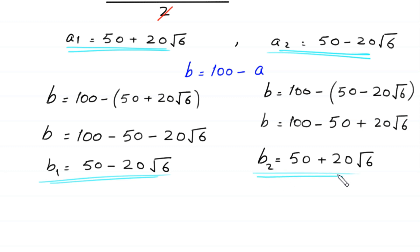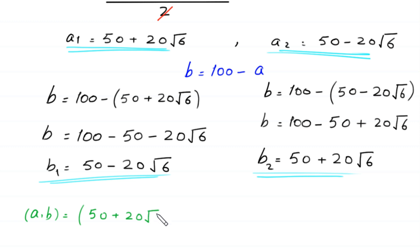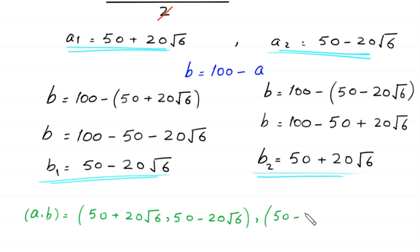So we get two pairs of solutions. The pair (A, B) equals: first pair is (50 plus 20 times square root of 6, 50 minus 20 times square root of 6), and the second pair is (50 minus 20 times square root of 6, 50 plus 20 times square root of 6).